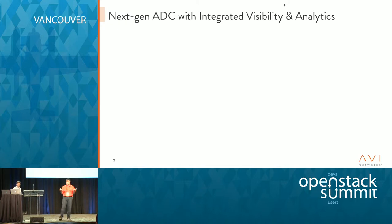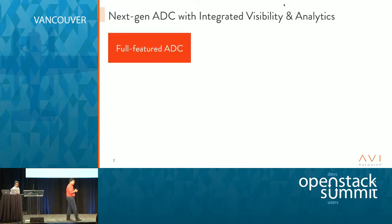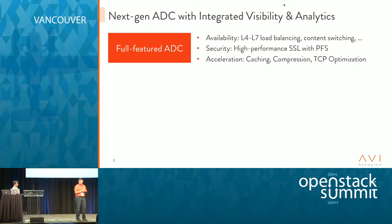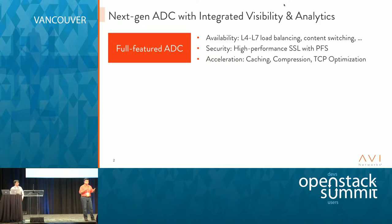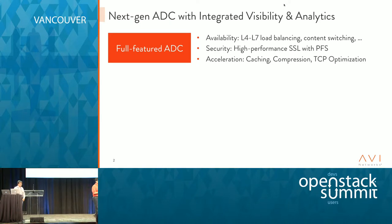So what is Avi Networks? We'll spend a couple of minutes on that and then go right into the demos. Avi Networks is the next-gen ADC, load balancer, with integrated analytics. It's a full-featured ADC — unlike the reference implementation which doesn't have many of the features — it's a full ADC: L4, L7, high-performance SSL with perfect forward secrecy and acceleration.